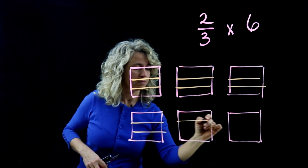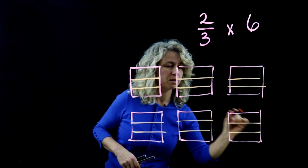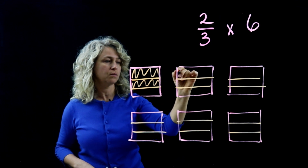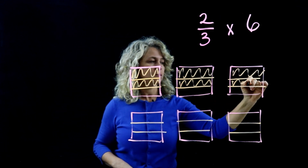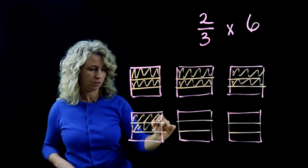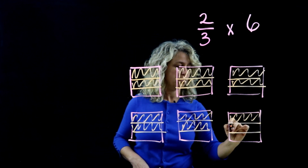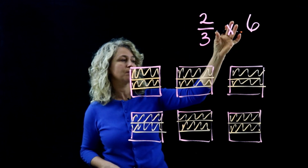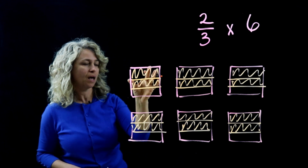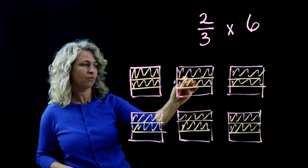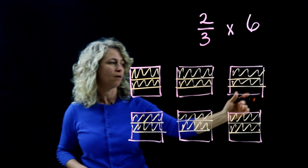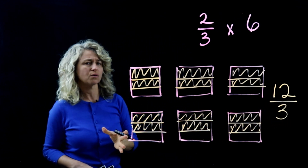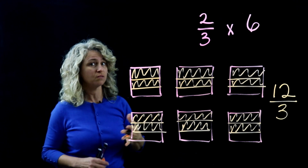Fill in two of the thirds on each of the six boxes. Now count how many thirds are shaded in total: one, two, three, four, five, six, seven, eight, nine, ten, eleven, twelve. So we have twelve thirds shaded.